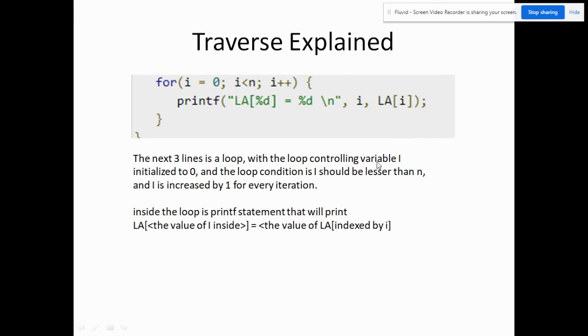Then the next three lines is actually a loop. With the loop controlling variable i initialized to zero, and the loop condition is i should be lesser than n for the loop to iterate. And then at the end of each loop, at the end of each iteration, we have here i plus plus. That means we're going to add one to i for every iteration.